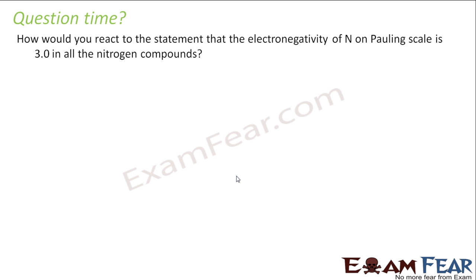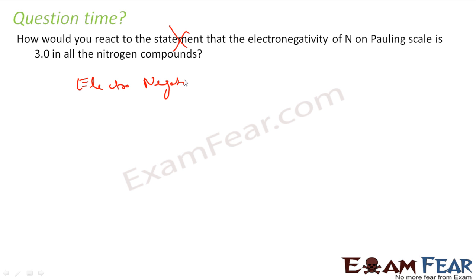So let's take some questions now. How would you react to the statement that the electronegativity of nitrogen on the Pauling scale is 3.0 in all nitrogen compounds? I would say the statement is incorrect.